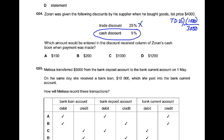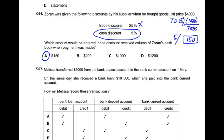Hamne pehle bhi baat ki hai, jab bhi aap cash discount lagate hai, toh wuh list price peh nahi lagate hai. Trade discount ke baad jo amount bachta hai, us peh lagate hai. Ab 3,000 peh hum lagayen ga 5%, jo bhanayega 150. 3,000 peh five percent — toh discount received kitna hai ga — 150 hai.